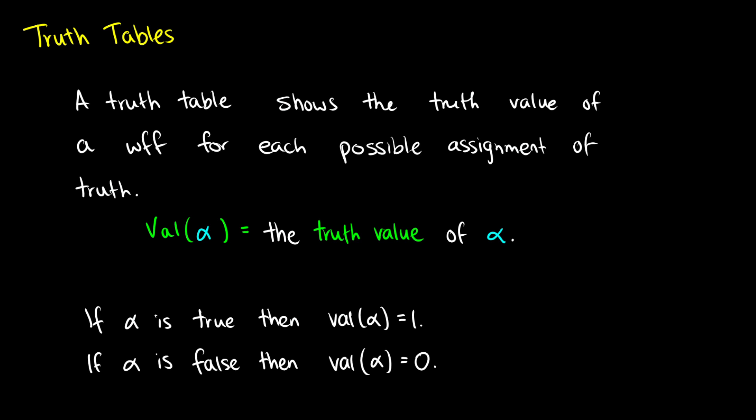We have a little notation here. We say that the value of some well-formed formula alpha — we write that as the truth value of alpha. So whenever you see val of alpha, that means the truth value. We have some conventions: if alpha is true, then the value of alpha is 1. In some textbooks you see T, in others you see 1. I like to use numbers because you can think of a lot of these operators numerically. If alpha is false, then the value of alpha is 0. So 0 and F are often interchanged — something is not true, it is false, it is 0.